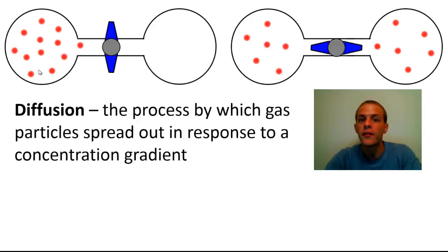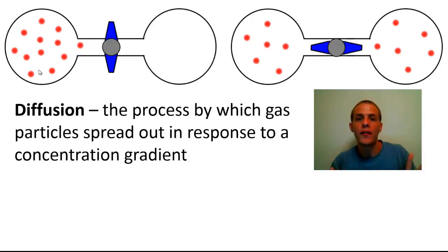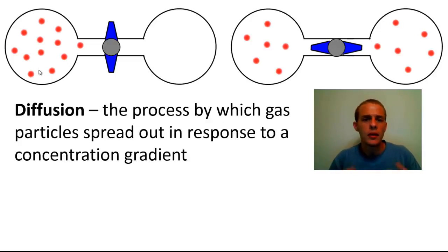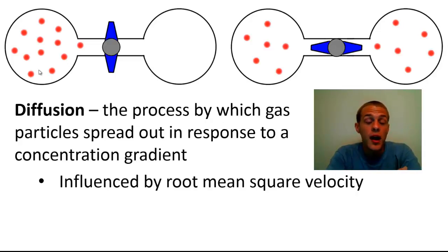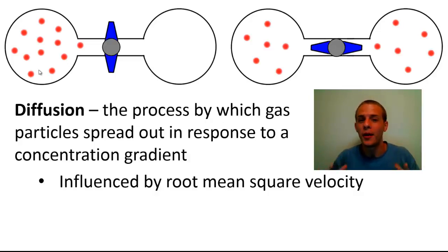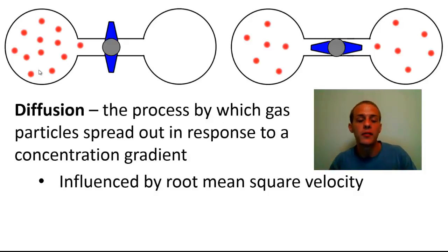This phenomenon is called diffusion. Diffusion is the process by which gas particles spread out in response to a concentration gradient — gas particles travel from an area of high concentration to an area of low concentration. We won't discuss why diffusion occurs here; that's a topic for a thermodynamics video. What we can say is that diffusion is influenced by how fast the gas particles are traveling, i.e., the root mean square velocity. If you're unfamiliar with that, think of it as the average speed of gas particles.